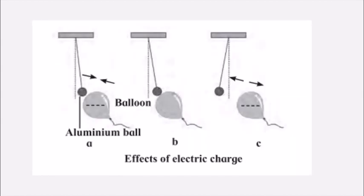In this diagram, the phenomenon happening is static electricity. When certain objects are rubbed against each other, they produce an electric charge on their surface at the place of friction, due to electrons, and this remains for a short time — this is static electricity. In picture B, we observe attraction between the charged balloon and the uncharged aluminium ball. In picture C, the charge has transferred to the aluminium ball, and because they now have the same charge, there is a repulsion taking place. These are the effects of electric charges.